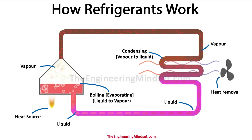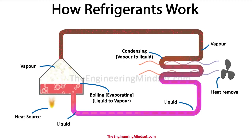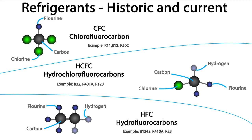When we talk about refrigerants we mean a fluid which is able to easily evaporate and condense continuously, and so these are used in refrigeration and air conditioning systems. Some of the historic and current main types of refrigerants fall into the following categories: CFCs, HCFCs, and HFCs. CFC stands for chlorofluorocarbons, HCFC stands for hydrochlorofluorocarbons, and HFC stands for hydrofluorocarbons. You can see why these acronyms are used — the full names are just horrendously long.